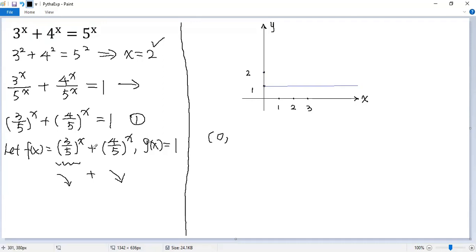So for example, when x equals 0, you know y equals 2. When x equals 1, y equals 3/5 + 4/5, so 7/5, which is 1.4.